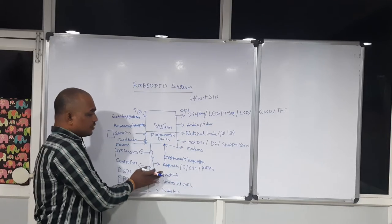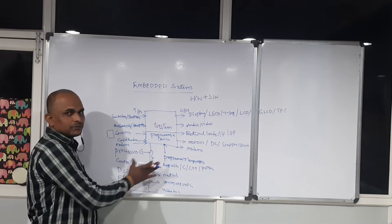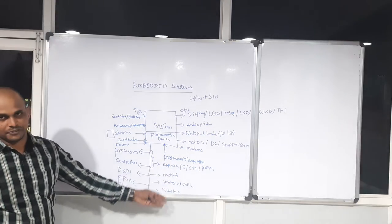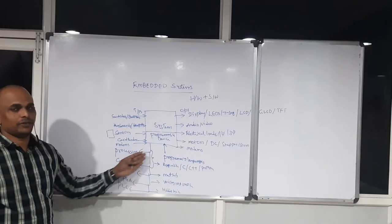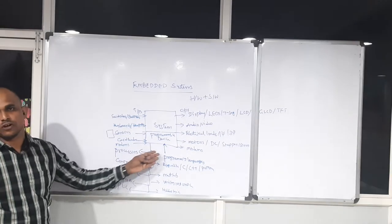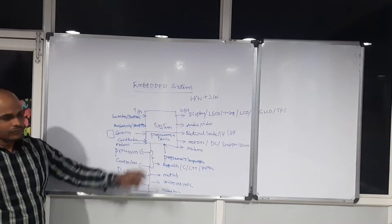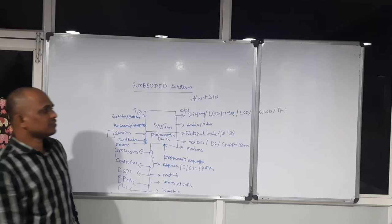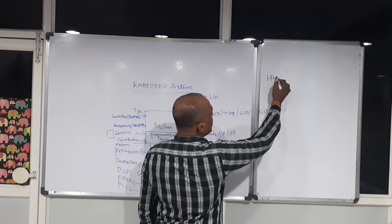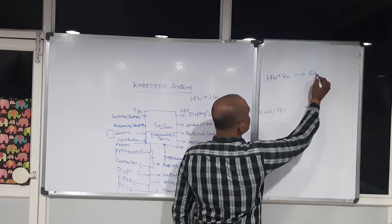This is what people are calling the standard definition: hardware and software combination is an electronic system. If you want to justify this, here is a simple equation: hardware plus software combination is the system. From the hardware side, you need to focus on the programmable device as the most important component. Don't think that resistors, capacitors, and all other components are not important — they are also very important for your system. But without writing a program, your programmable device will act as the brain of your system.